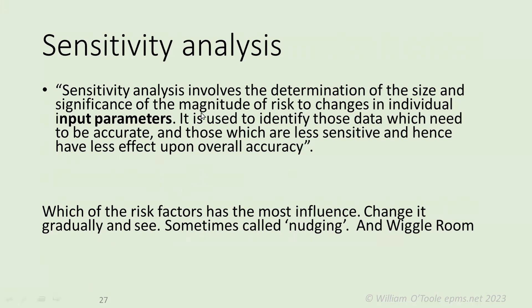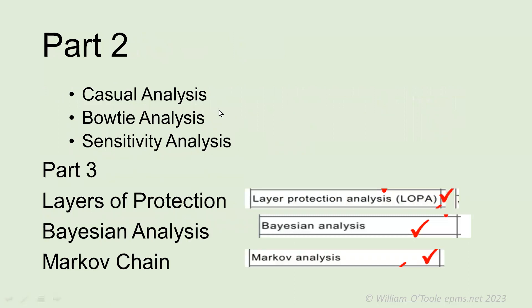Sensitivity analysis is a good example of where the ISO 31010 technical language makes it difficult to apply unless you have an engineering background — it talks about 'input parameters,' which can be confusing. Basically, what you're doing is looking at the factors and seeing which has the most influence on the disaster or the effect, then changing things gradually and seeing what the effect is. It's also called nudging — you're looking at what wiggle room or tolerance you have. That's sensitivity analysis.